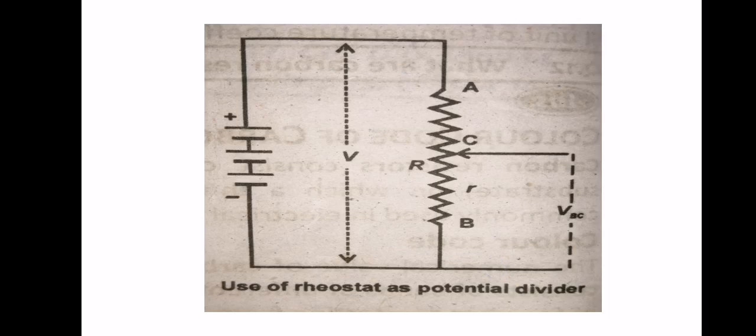Small r is basically the resistance between B and C. If you move the sliding contact from B to A, then the value of small r increases.